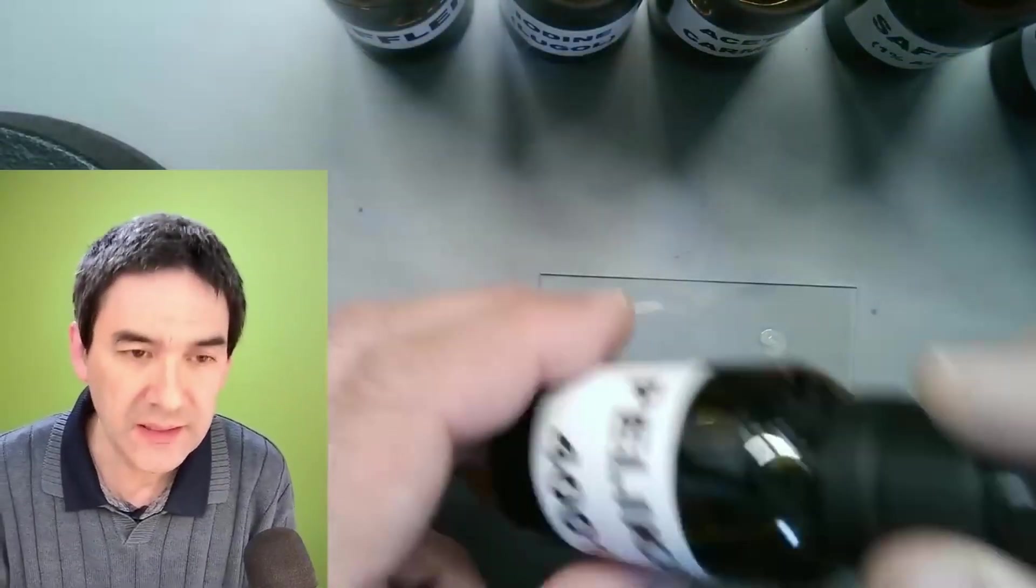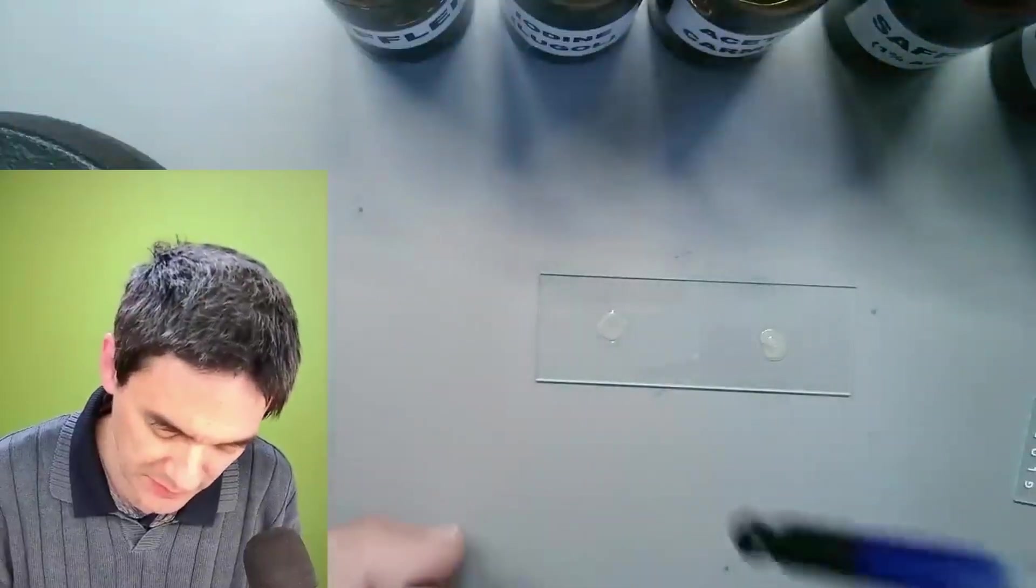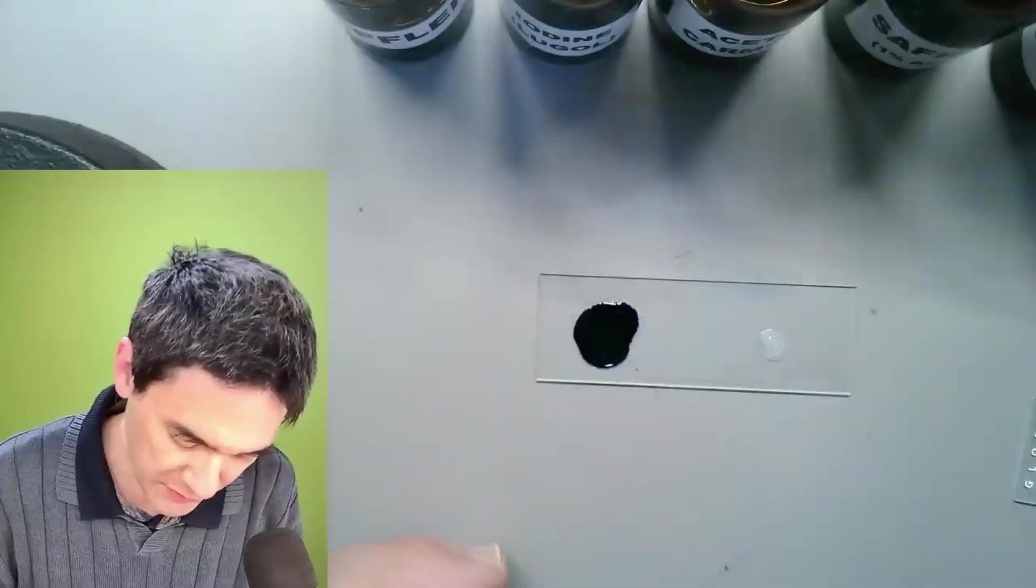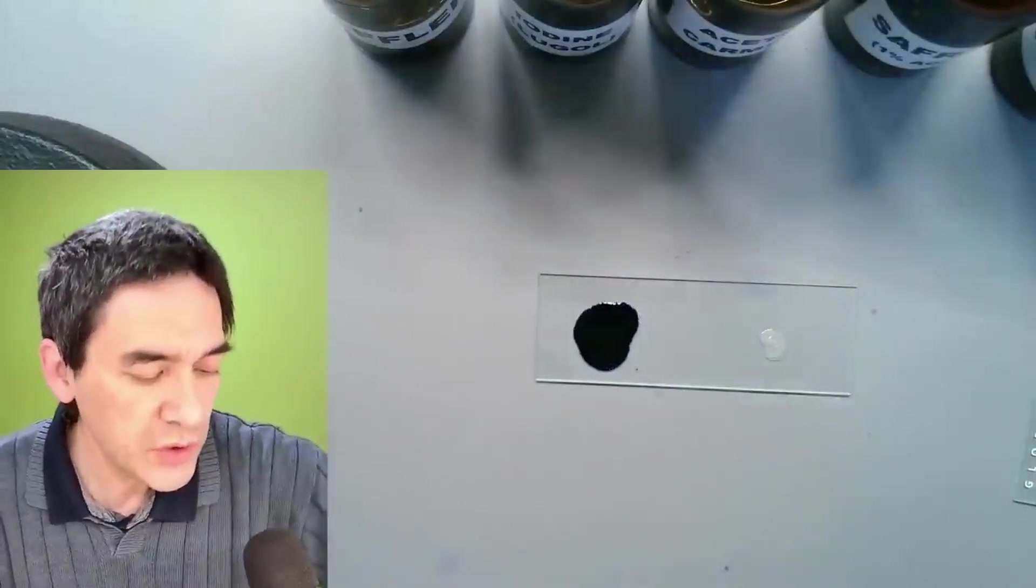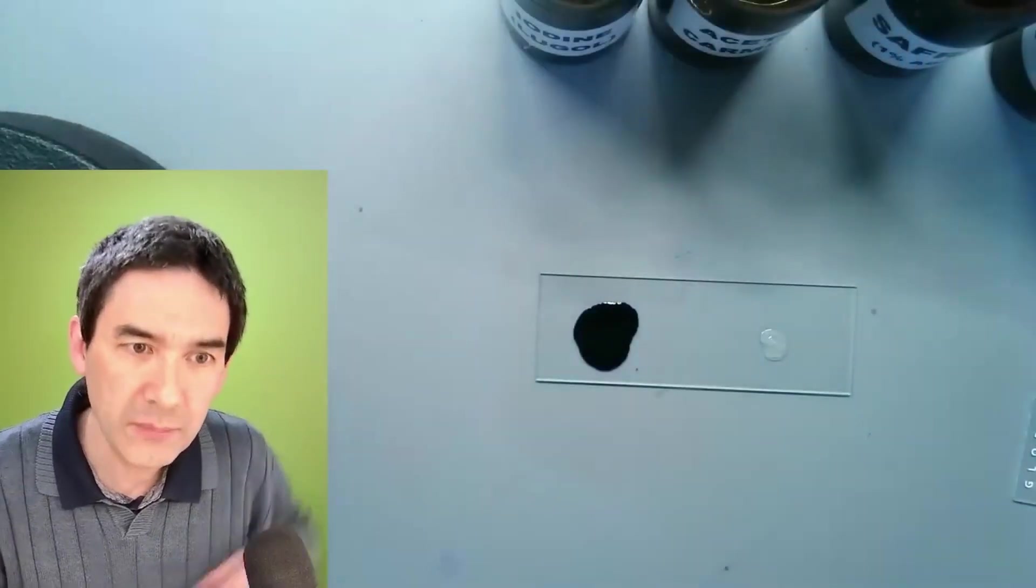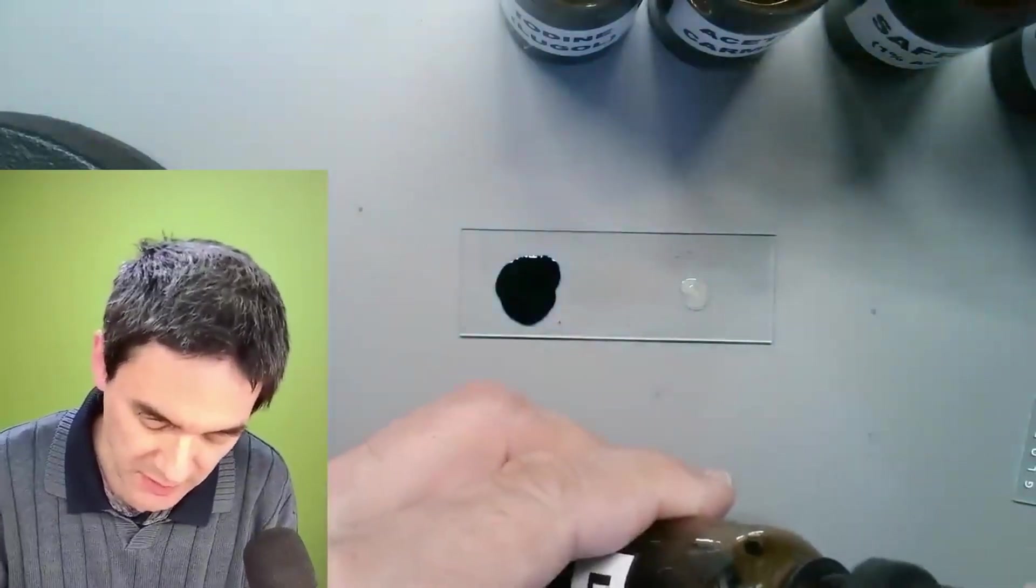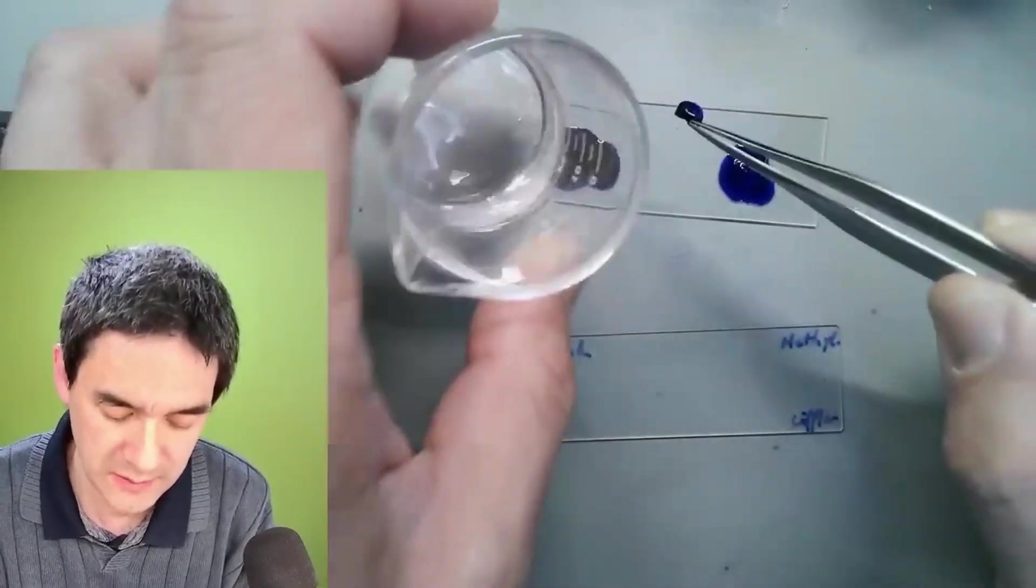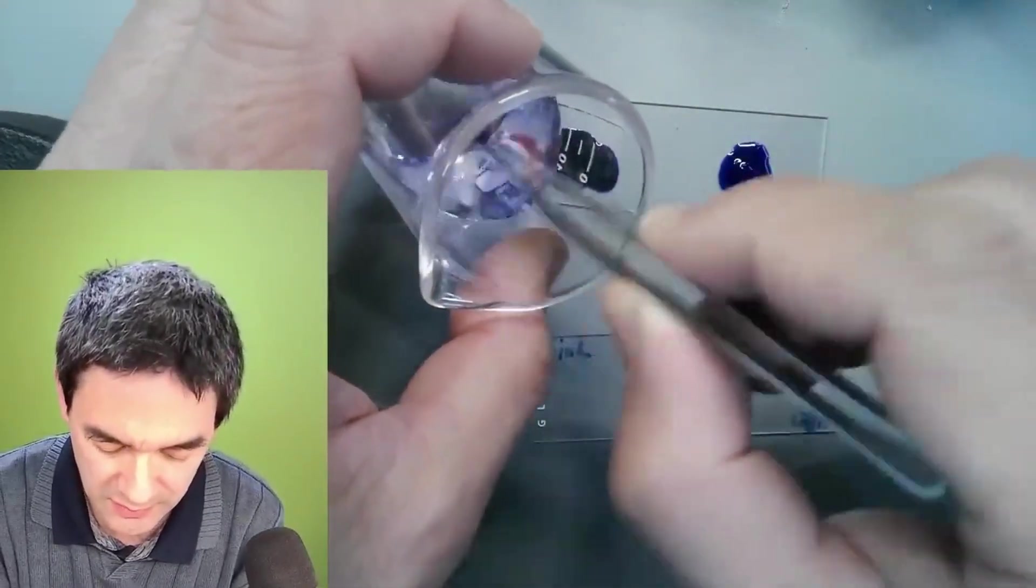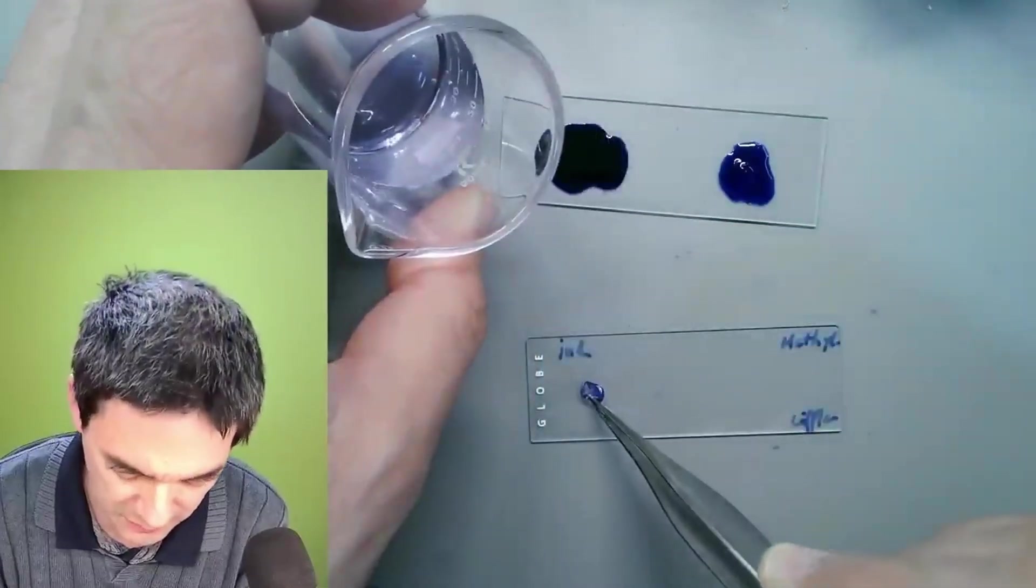The first one is going to be the pelican ink. This is just regular fountain pen ink. I'm going to be adding a drop here. And the next one is Loeffler's solution, which is basically methylene blue plus alcohol plus potassium hydroxide. There is a specific formulation. I'm going to just put it on here.